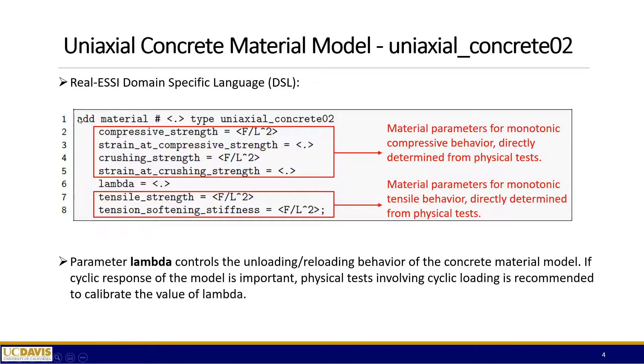Later there are some plots that better explain those numbers. Then we have the lambda parameter used to define the cyclic behavior. And we have the two tensile parameters used to define the monotonic tensile behavior. They are also determined from physical experimental tests. I want to mention that the parameter lambda controls the cyclic behavior of the model. If the cyclic response is important, we highly recommend you do more physical tests involving cyclic loading to better calibrate this lambda value.